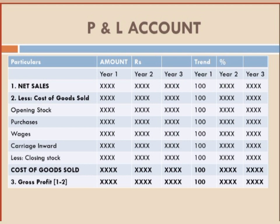The first point is net sales. Under net sales, you mention whatever amount is given. Always remember when it comes to 3 years, you have to find out which is the smallest year. I am not saying it's always the first year, because sometimes the years are given as 2019, 2018, 2017 — starting from the latest — so that can be confusing. That's why I say you have to pick whichever is the smallest.